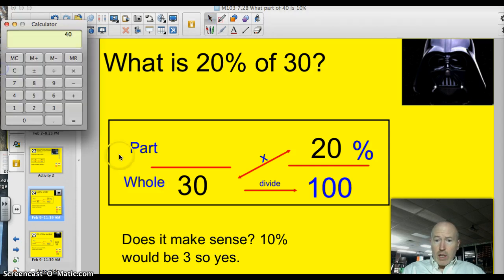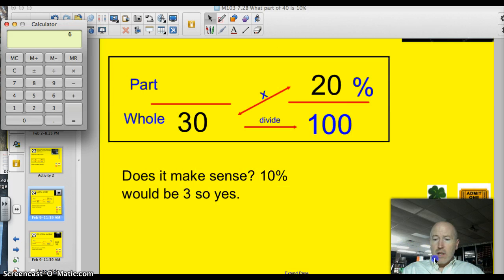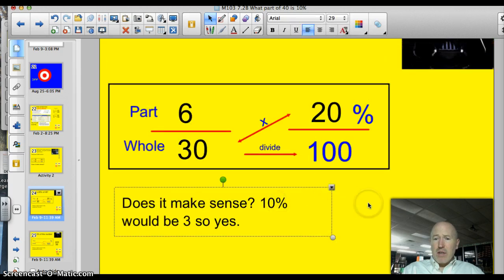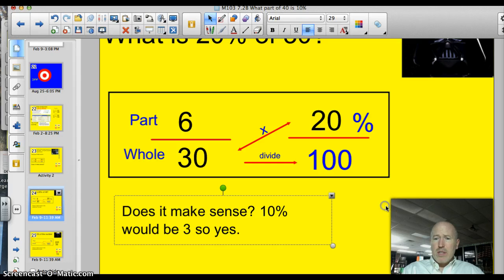Now, get our calculator out. So we've got whole is 30, so we're going to multiply 30 times 20. And then we'll divide that by 100 equals 6. 30 times 20. 3 times 2 is 6. We've got two zeros. We divide by 100, and we get 6. Does that answer make sense? Yeah, it does make sense, because 10% of 30 would be 3, so 20%, yeah, it would be 6.